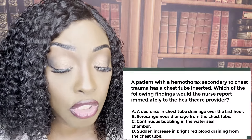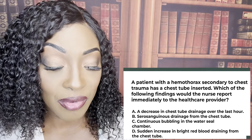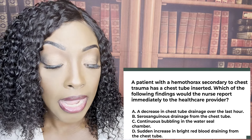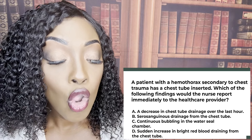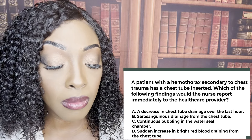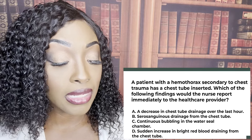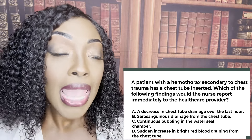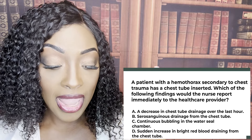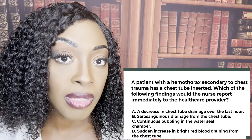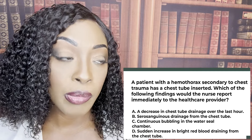A patient with a hemothorax secondary to chest trauma has a chest tube inserted. Which of the following findings would the nurse report immediately to the healthcare provider? A, a decrease in chest tube drainage over the last hour. B, serosanguinous drainage from the chest tube. C, continuous bubbling in the water seal chamber. Or D, sudden increase in bright red blood draining from the chest tube. The correct answer is D — even if you had no idea, seeing the word 'sudden' should be your first red flag, along with 'bright red,' which means active bleeding.